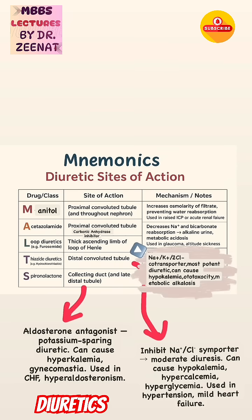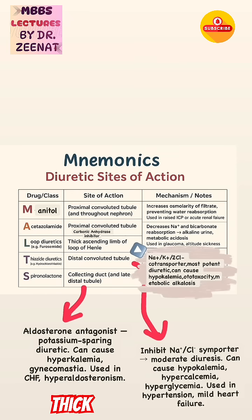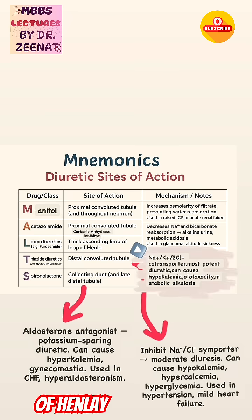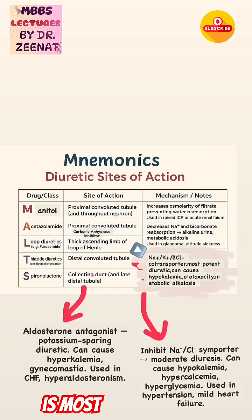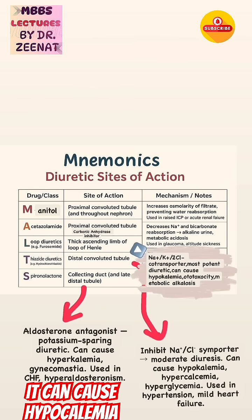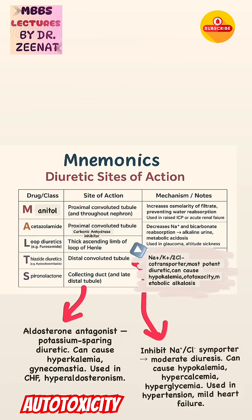Loop diuretics, for example furosemide, act on the thick ascending limb of the loop of Henle. They inhibit the sodium-potassium-2-chloride co-transporter. Loop diuretics are the most potent diuretics but can cause hypokalemia, ototoxicity, and metabolic alkalosis.